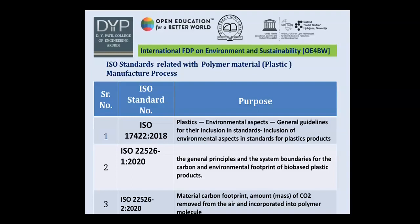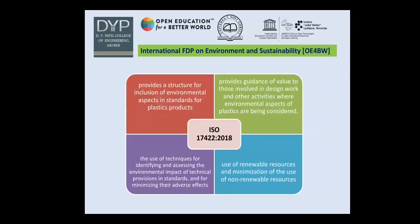ISO 17422:2018 covers the amount of CO2 removed from the air and incorporated into polymer molecules. It provides a structure for the inclusion of environmental aspects in standards for plastic products, guidance for those involved in design work where environmental aspects of plastics are being considered, techniques for identifying and assessing environmental impact in standards, and use of renewable resources while minimizing non-renewable resources.